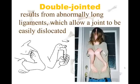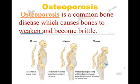Double-jointedness occurs because a person has abnormally long ligaments, which allows their joints to become easily dislocated — since the function of ligaments is to keep those joints in place. Osteoporosis is a common bone disease that causes bones to become weakened and brittle. It's more often seen in women and has to do with the estrogen cycle and the depletion of calcium. Depending on the area affected — the spine can cause the hump you see in some people — it can also affect the hip, leg bones, and vertebrae.